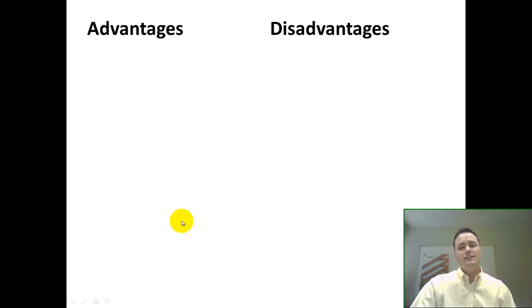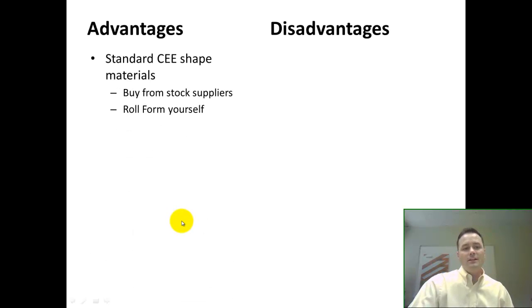This is a good option with many advantages and disadvantages. The advantages of back-to-back C trusses are they use a standard C shape. This is material that can be bought from standard suppliers, or you can roll form it yourself if you have a C-shaped roll former.